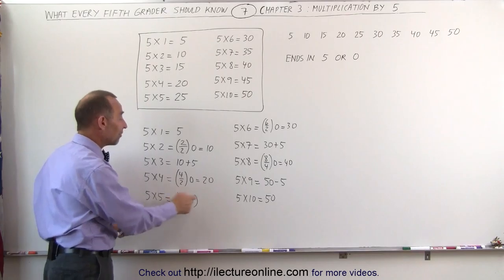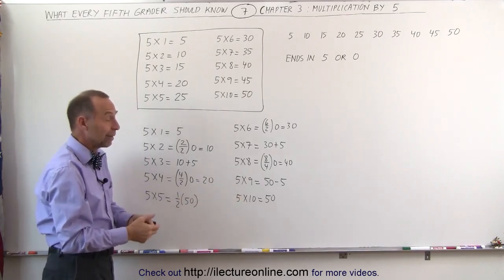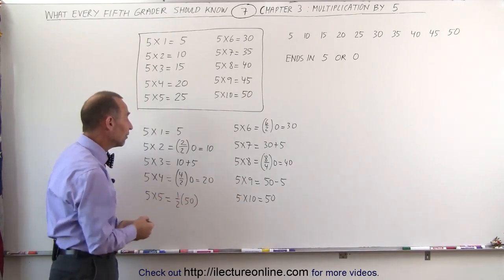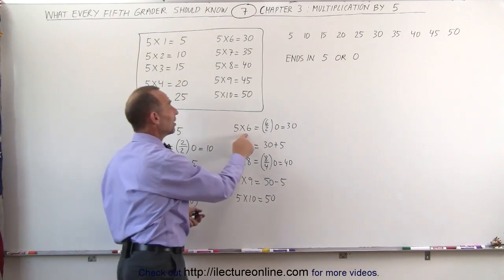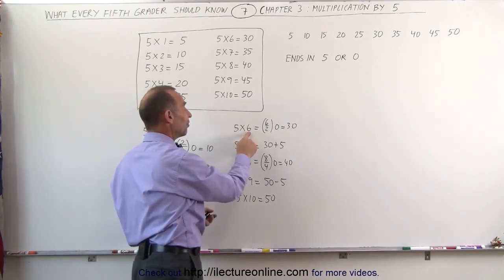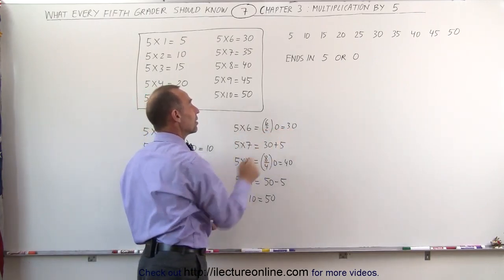5 times 5 is half the 5 times 10 answer, 5 times 10 is 50, half of that is 25. 5 times 6, again, you take half of 6, which is 3, add a 0, you get 30.